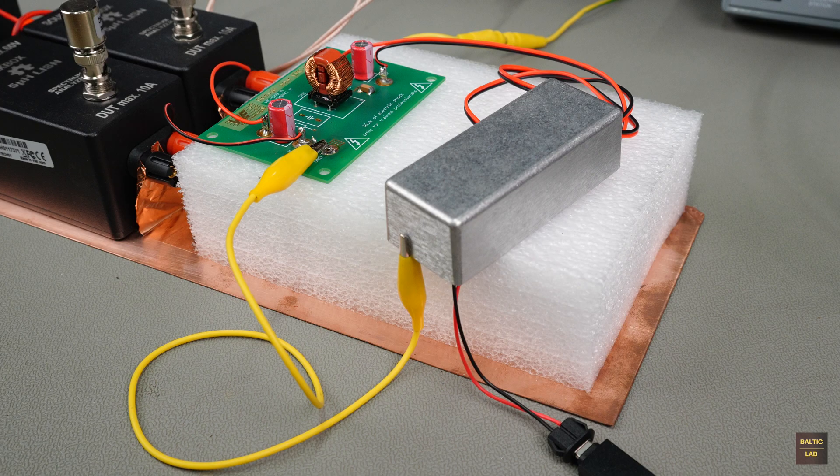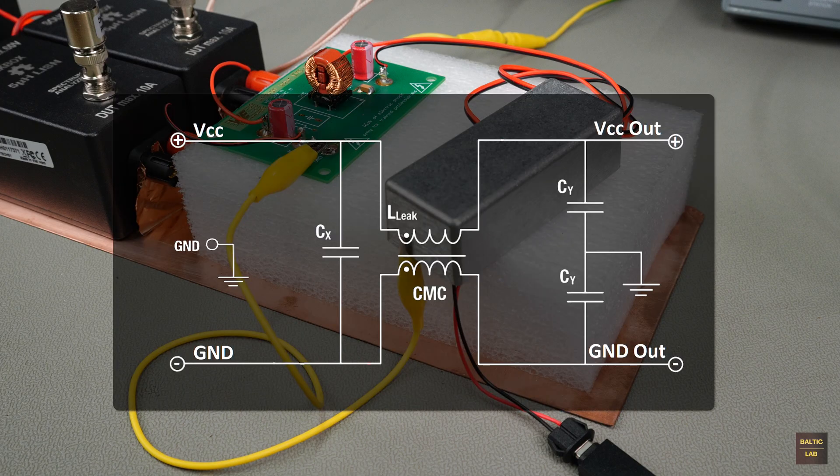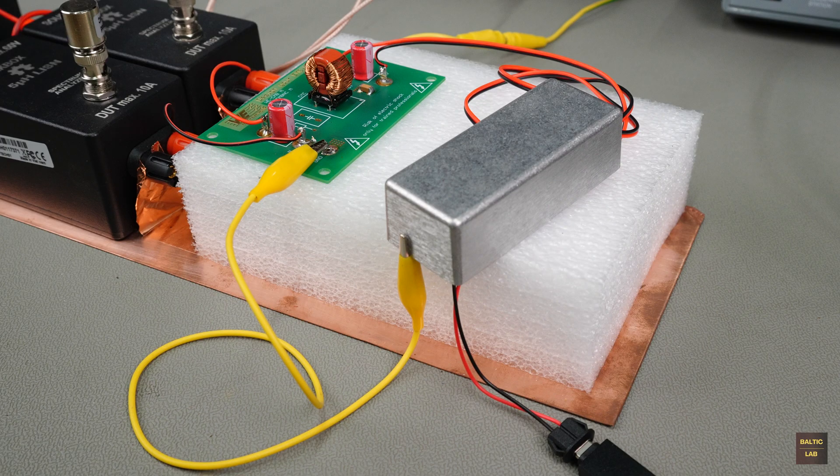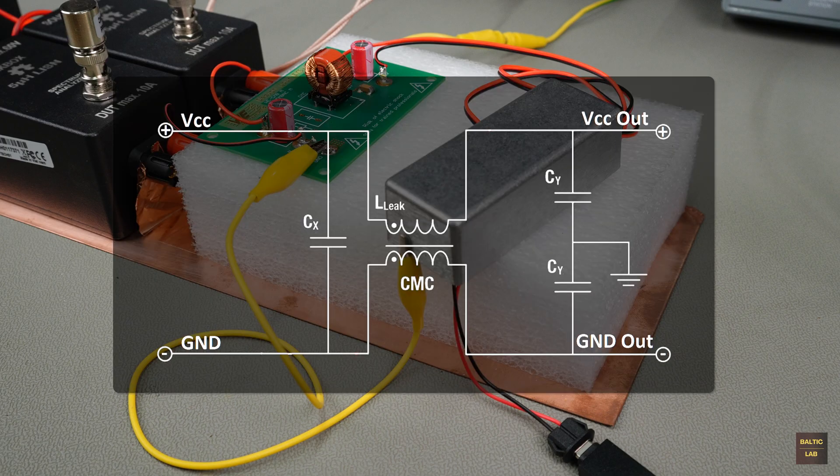The cause, believe it or not, lies with the Y capacitors and how they are connected to the ground rail. The well-intentioned idea turns out to be counterproductive. Instead of providing an effective path for common mode noise, they simply bypass the common mode choke. A common real-world mistake, which I've deliberately included here.